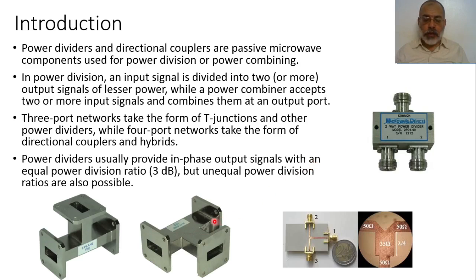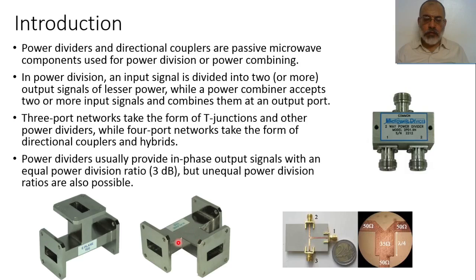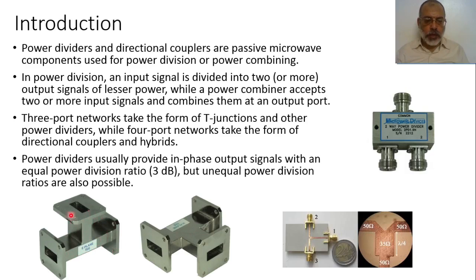Another example for power dividers is in the case of waveguides: the E-plane waveguide and the H-plane waveguide. Assuming the dominant mode has an electric field in one direction and a magnetic field in another, in the H-plane we divide the signal along the direction of the magnetic field to two output ports. In the E-plane, the electric field in the dominant mode reaches a junction and is divided between two sides. These are called the E-plane waveguide divider and the H-plane waveguide divider.